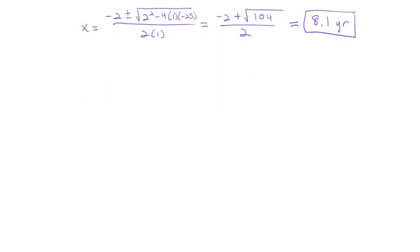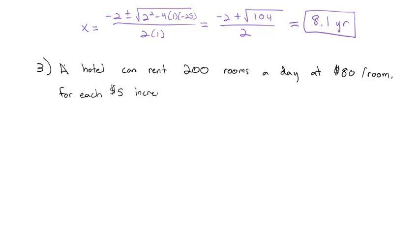Let's do one more example before I let you go to practice some of your own. This is a great example about pricing and how demand is adjusted by pricing. Because as the price increases, fewer people are going to purchase it. So how much do you charge to make the most money? That's the question that a hotel wants to know. A hotel can rent 200 rooms a day at $80 per room. For each $5 increase, 10 fewer rooms will be rented.